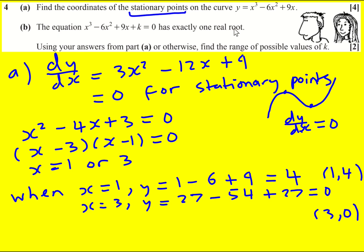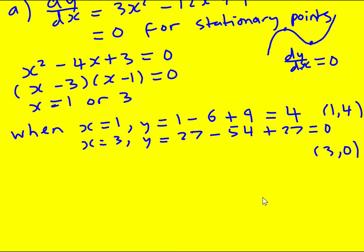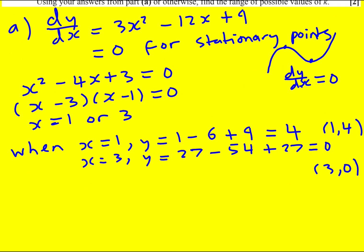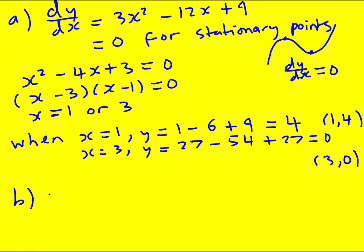For part b, we're told that this cubic — now with a plus k — has exactly one real root, and using our answer from part a or otherwise, we need to find the range of possible values of k. A good idea is to try and sketch the graph, which involves finding the roots of the original equation y equals x cubed minus 6x squared plus 9x.